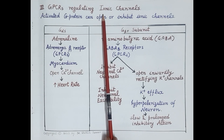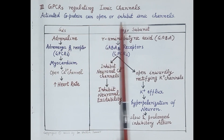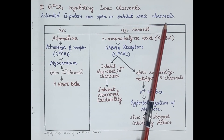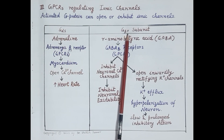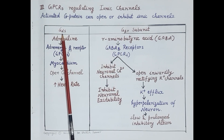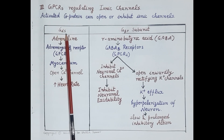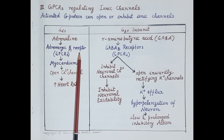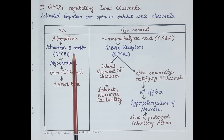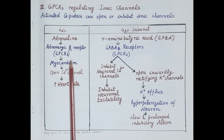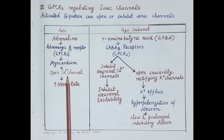G protein coupled receptors also regulate ion channels — activated G protein can open or inhibit calcium and potassium channels. Regarding the G alpha stimulatory subunit (GalphaS): when adrenaline binds to adrenergic beta-1 receptors located in the myocardium, there is opening of calcium channels, which causes an increase in heart rate.